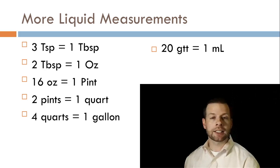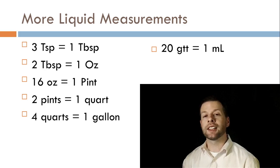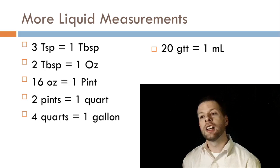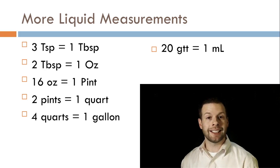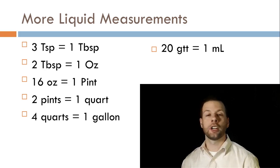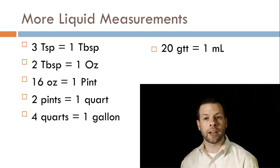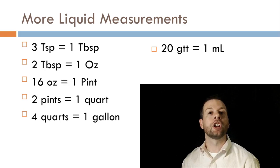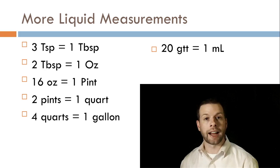On the right side, I put it over there by itself because I do think it's important, and that is 20 drops, GTT meaning drops, per milliliter. So if you're trying to figure out a day's supply for an eye drop, and you're figuring out they're going to use four drops in each eye twice a day, and it's a seven mil bottle, you need to find out how long that bottle would last.